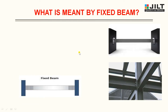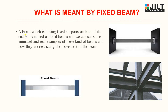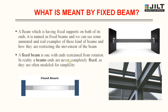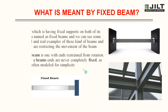Now let us move towards what is meant by a fixed beam. You can view the images — both ends are fixed. A beam which has fixed supports on both of its ends is named as a fixed beam. We can see animated and real examples of these beams and how they restrict the movement. A fixed beam is one with ends restrained from rotation. In reality, a beam's ends are never completely fixed, though they are often modeled as such for simplicity.